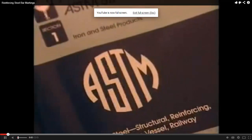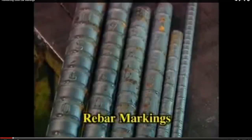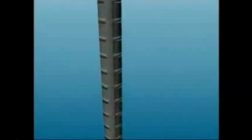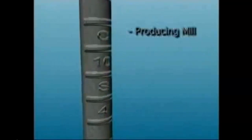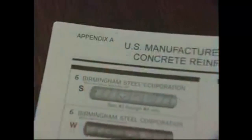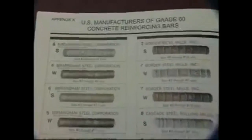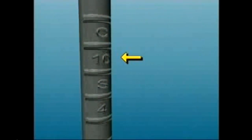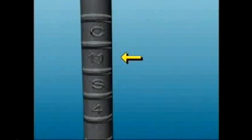ASTM specifications require that reinforcing bars be identified by marks rolled onto the surface: indicating the producing mill, bar size, type of steel, and minimum yield designation. The producing mill is shown by letter or symbol. The bar size corresponds to metric bar sizes number 10 through 36, 43, and 57, or inch-pound markings number 3 through 11, 14, and 18.